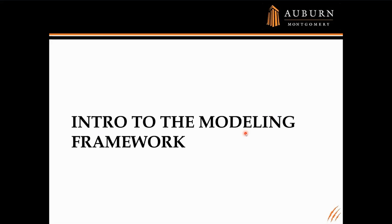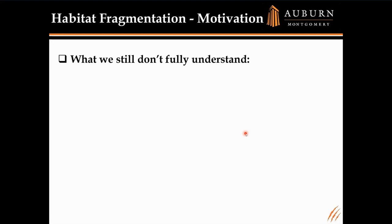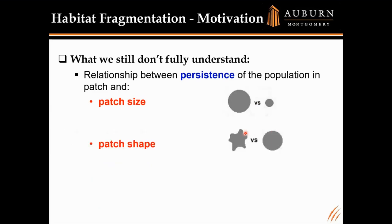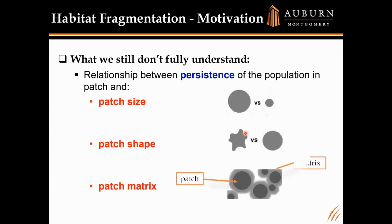We're going to use a theoretical population model to understand some of the mechanisms behind the DAR we see in the field. As ecologists, what we still don't fully understand is the relationship between persistence of a population in a patch and the patch size, patch shape, and patch matrix. As a mathematician, the word 'matrix' is unfortunate — to an ecologist, the matrix is the area around a patch; to a mathematician, it's a rectangular array of numbers. For this talk, anytime I say matrix, I mean the area surrounding a patch.